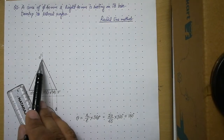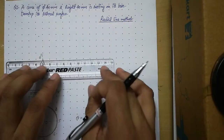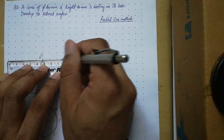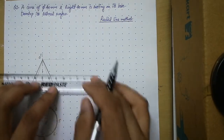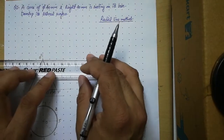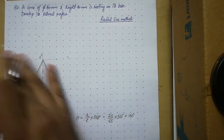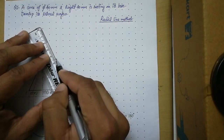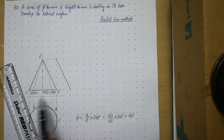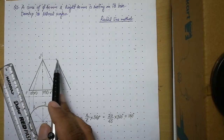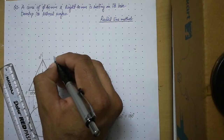Now we need to copy the slant height O-dash 5-dash. Align your scale with the base of the cone and extend the base with a continuous thin line. Align the scale to the apex in horizontal position and draw a continuous thin line. From 5-dash measure 20mm on this line and mark a point. Take the same 20mm distance from O-dash on the parallel line, mark a point, then erase the extra lines and join the two marked points with a thick line. This new line is the copy of O-dash 5-dash, parallel and equal in length. Call this A-dash 5-dash.